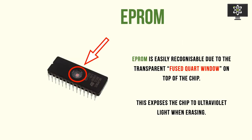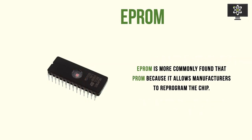The next technology is EPROM — Electrically Programmable Read-Only Memory. These are easily recognizable due to their transparent fused quartz window on top of the chip, which allows the chip to be exposed to ultraviolet light when erasing. In order to change the data on an EPROM, you need to expose it to ultraviolet light, which erases the data so you can go ahead and reprogram it. It does not use burning like PROM — it uses ultraviolet light to erase. It's more commonly found than PROM because it allows manufacturers and users to reprogram the chip by erasing it, and this was a huge breakthrough after PROM.